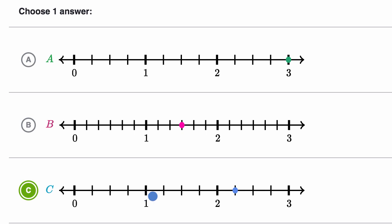So to go from 0 to 1, you go 4 fourths, and then 5 fourths, 6 fourths, 7 fourths, 8 fourths, and 9 fourths. So choice C is definitely looking good.